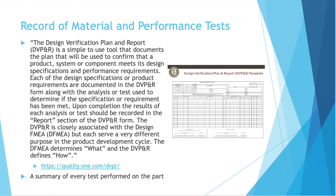The Design Verification Plan and Report (DVP&R) is a tool that documents the plan used to confirm that a product, system, or component meets its design specifications and performance requirements. Each design specification or product requirement is documented in the DVP&R form along with the analysis or test used to determine if it has been met. Upon completion, the results of each analysis or test are recorded in the report section. The DVP&R is closely associated with the D-FMEA, but each serves a very different purpose: the D-FMEA is your 'what' and the DVP&R is your 'how.' Basically the DVP&R is a summary of every test performed on the part.